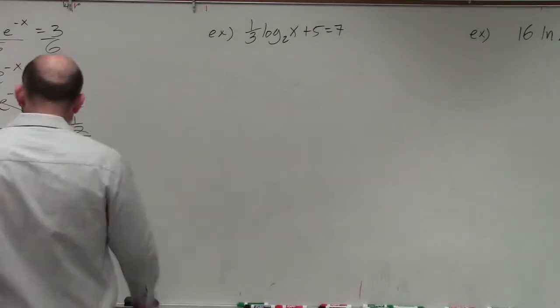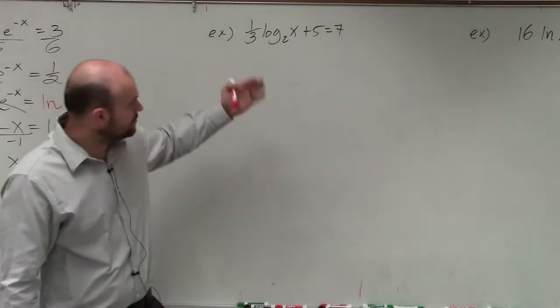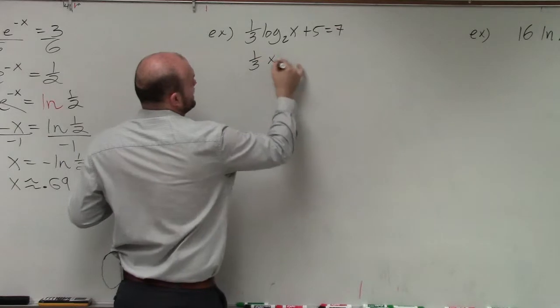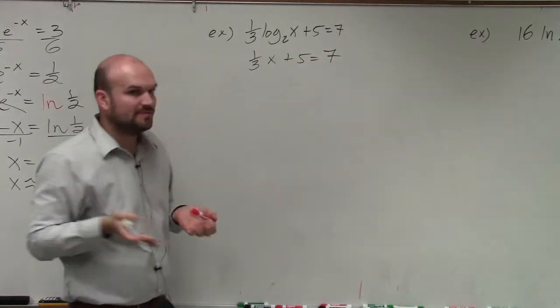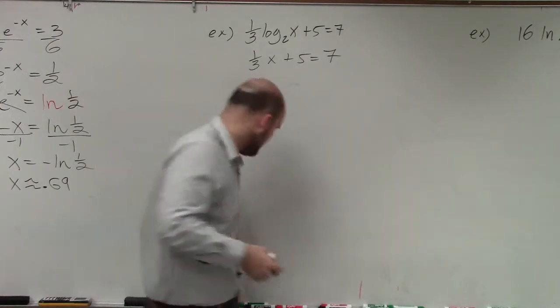Well, on this example, the main important thing, guys, is we need to isolate. But just like if we're solving anything else, if we had 1 third x plus 5 equals 7, and I said to solve, the first thing we always do is undo addition and subtraction first, then undo multiplication and division.